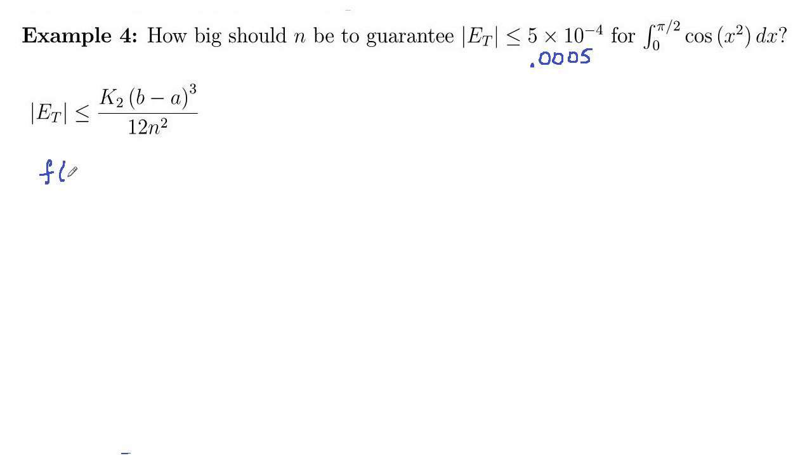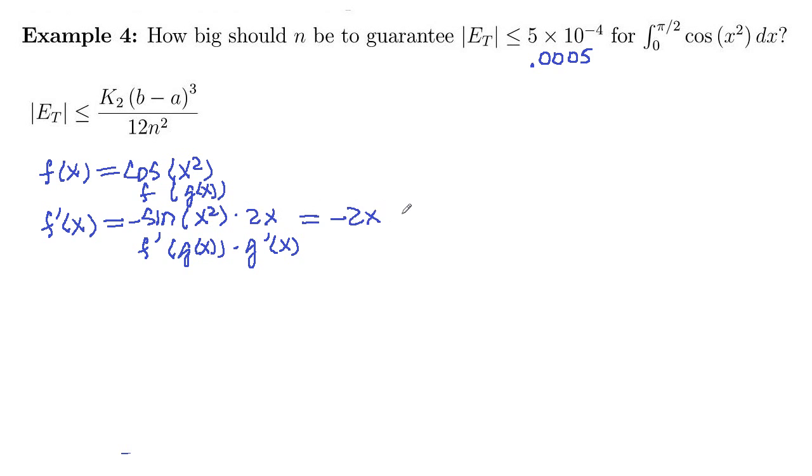So our function f of x is the cosine x squared. And we need two derivatives here, so f prime of x. Well, this is a composition of functions, an f of g of x. So the derivative of an f of g of x is f prime g of x times g prime of x. Chain rule. So f is cosine, f prime is negative sine. Inside stays the same, x squared, times derivative of the inside, 2x. So that's negative 2x sine of x squared.